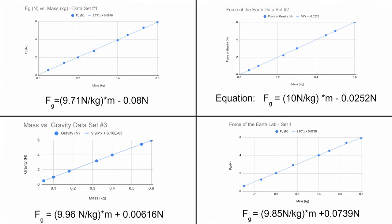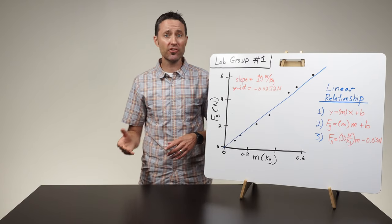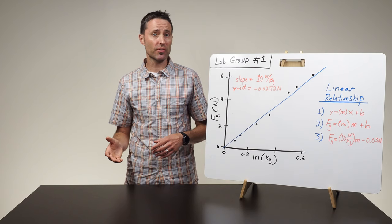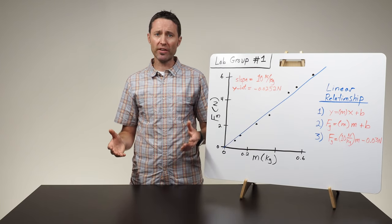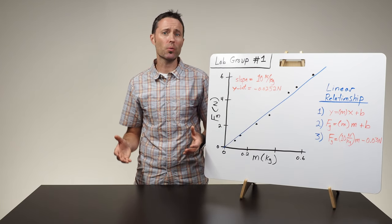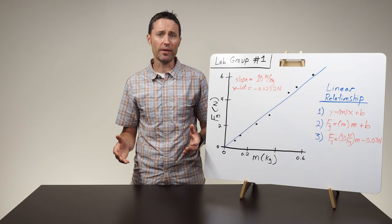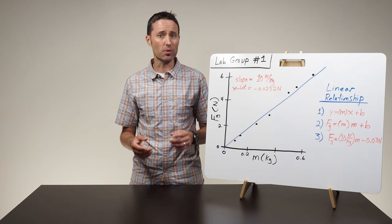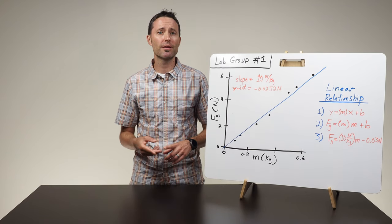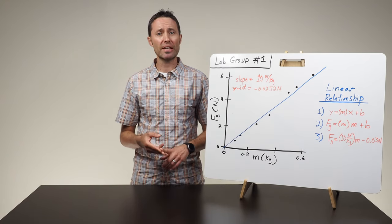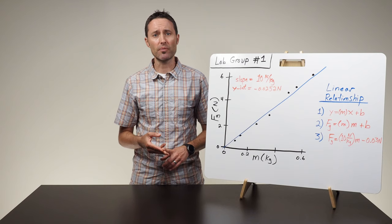For this lab, students will have similar graph shapes, slope values, and y-intercept values. Once the similarities and differences are identified, the rest of the conclusion discussion should focus on what the shape of the graph suggests about the relationship between the variables, the meaning of the slope, and the significance of the y-intercept.